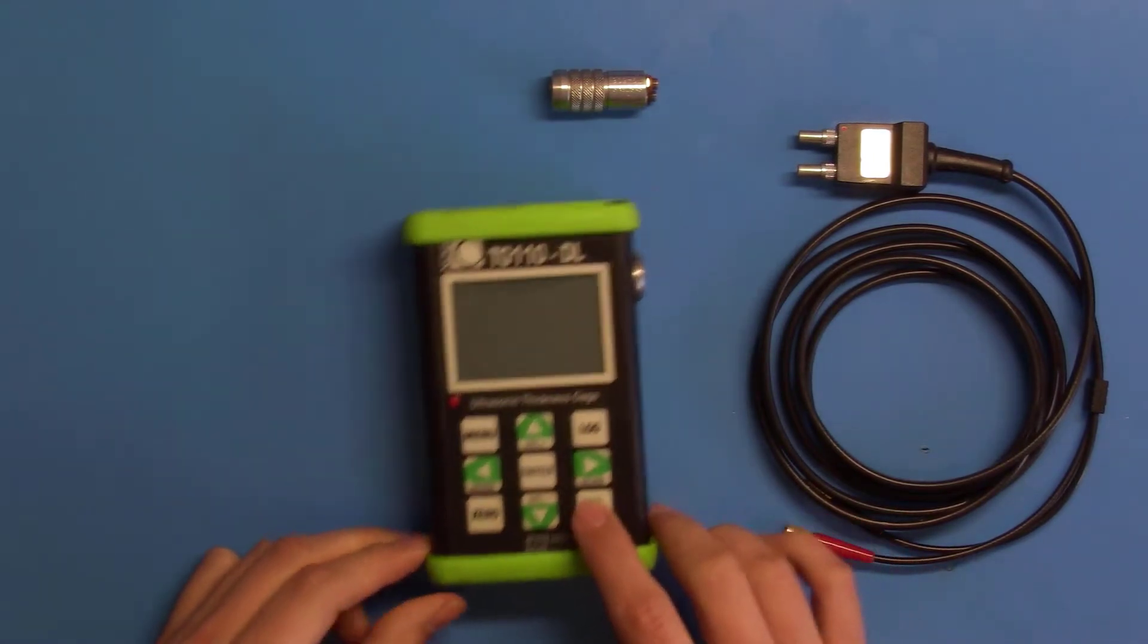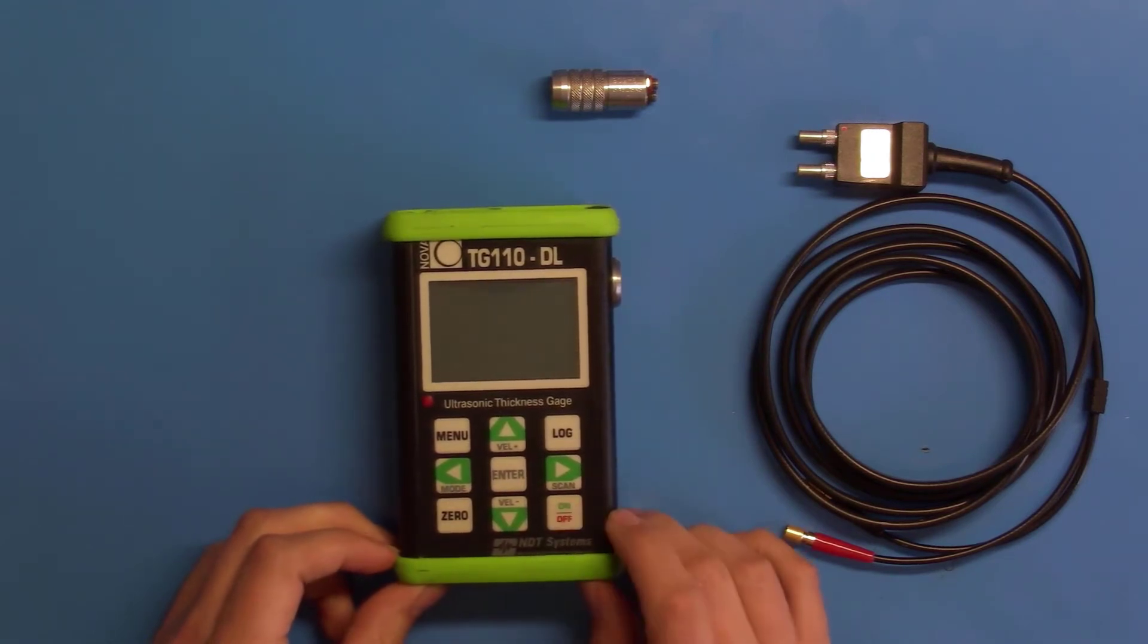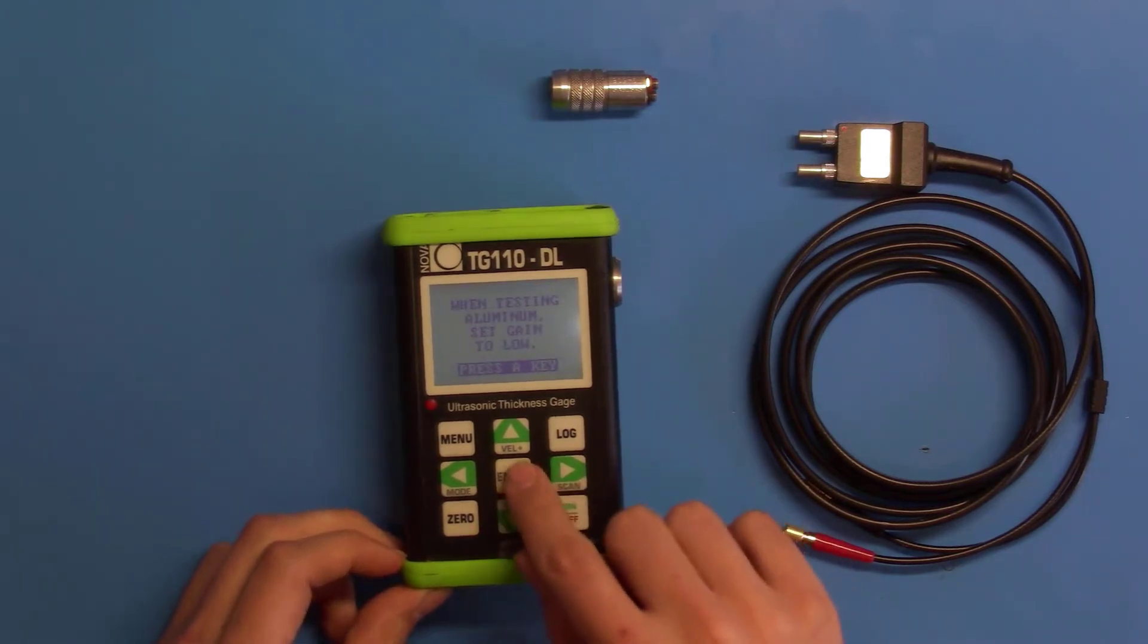First, let's turn the gauge on and make sure the settings are appropriate for our application. Push the on-off key, wait for the splash screen, and then push any key to continue.